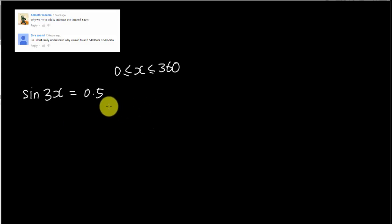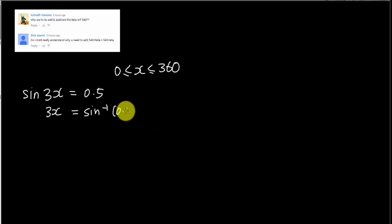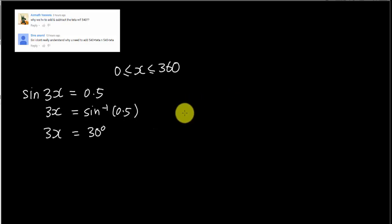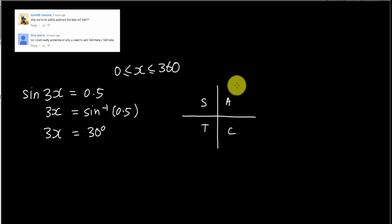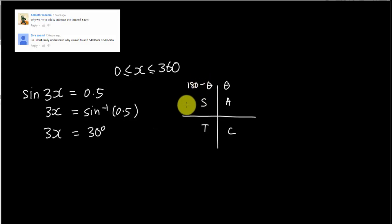First, move the sine to the other side: inverse sine of 0.5, and the calculator gives you 30 degrees. Now, sine is positive in the first and second quadrant — remember 'add sugar to coffee' — so in the first quadrant it's just delta (30°), and in the second quadrant it's 180 minus delta. So you get 180 minus 30 which is 150.